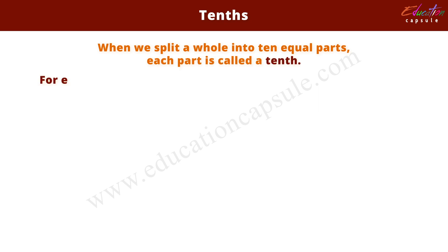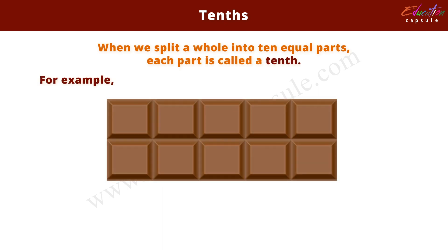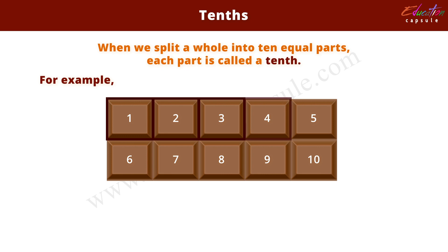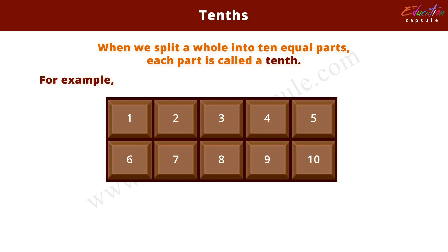For example, right here, a chocolate bar is split into ten equal parts. Each part is one out of ten equal parts. Hence, each part is called one tenth.